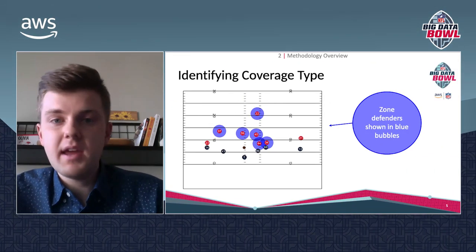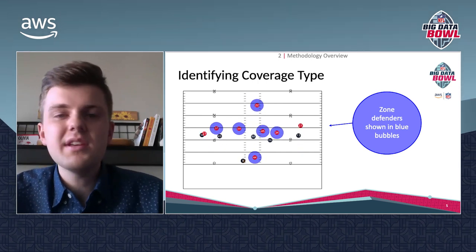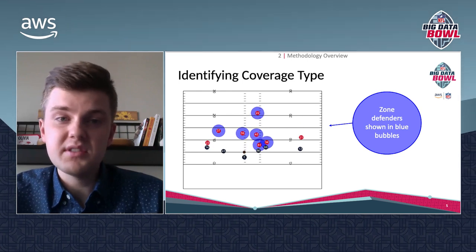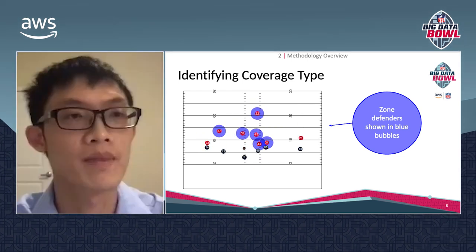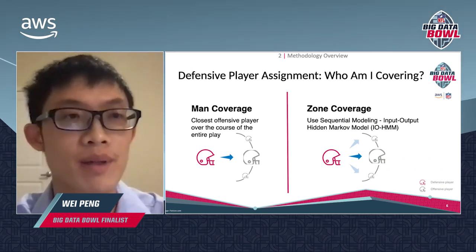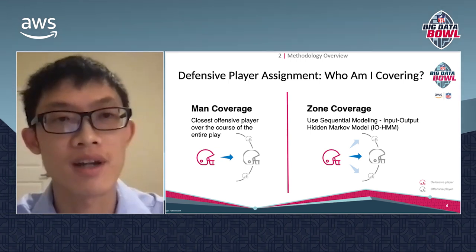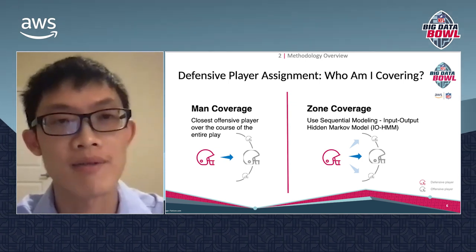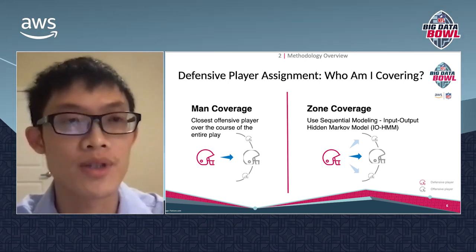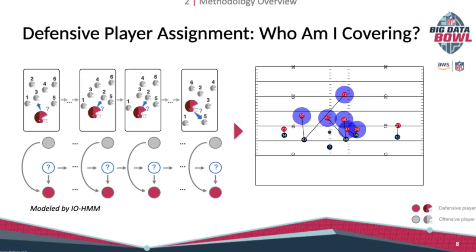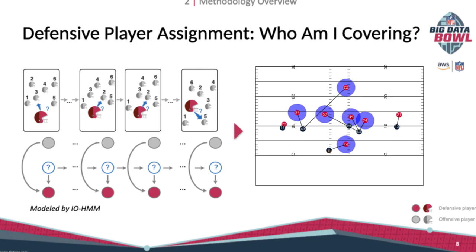For the first step — identifying man and zone coverage — we adapted an approach proposed by Yurko, Ventura, and Dutta, and ended up using clustering techniques. For man coverage, the player only covers one single offensive player during the play, so we think he's defending the closest player over the course of the entire play. For zone coverage, he could be covering different players, so we use sequential modeling. Based on the movement of the offensive players, we model how he transitions from defending one player to another and how he moves accordingly.